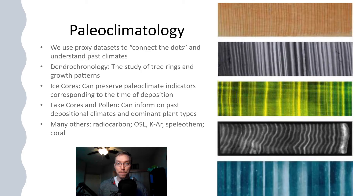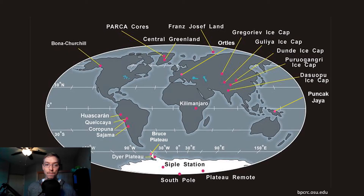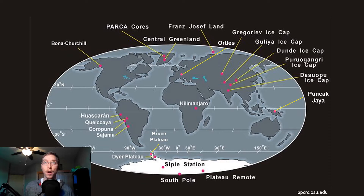In this video, we're talking about ice cores, which can preserve paleoclimate indicators corresponding to the time of deposition of the snow. Here are just a few of the places that ice cores have been pulled from: all over Greenland and Alaska, Chile and Peru, Antarctica, Kilimanjaro — wherever you have ice caps or glaciers, you can try to get at the paleoclimate records that they preserve.